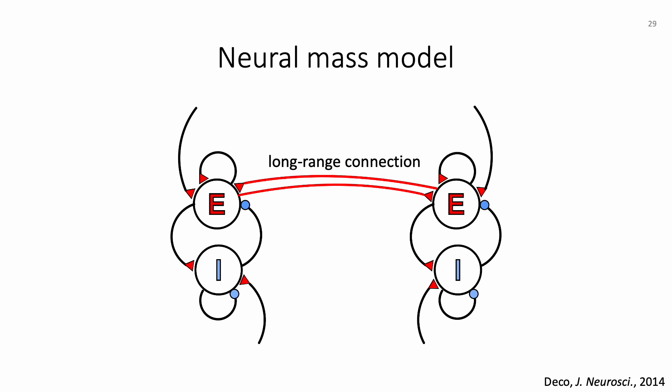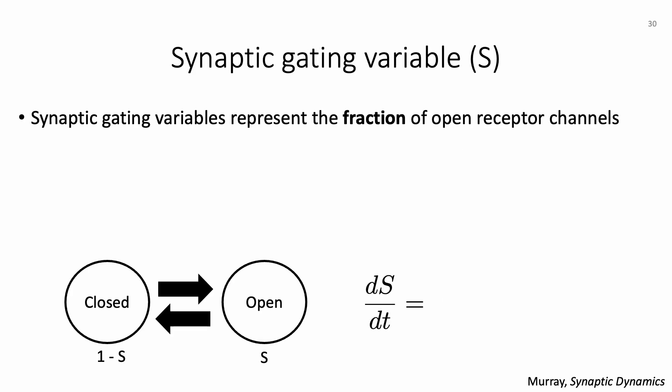To define EI ratio in the context of the neural mass model, we need to introduce the synaptic gating variable, which represents the fraction of open receptor channels. The range of the synaptic gating variable s is between 0 and 1. Channels can either be open or closed, and we use 1 minus s to represent the fraction of closed channels. Channels can switch between states at different transition rates, and we are interested in the dynamics or rate of change of the synaptic gating variable.